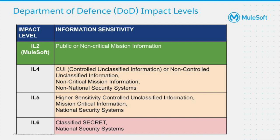DoD impact levels are a combination of the sensitivity of the information to be stored and/or processed in the cloud and the potential impact of an event that results in a loss of confidentiality, integrity or availability of that information. Impact Level 2 or IL2 accommodates DoD information that has been approved for public release or is non-critical mission information. Impact Level 4 or IL4 accommodates DoD's controlled or non-controlled unclassified information, non-critical mission information, and non-national security systems information. Impact Level 5 or IL5 accommodates DoD's higher sensitivity controlled unclassified information, mission critical information, and national security systems information. Impact Level 6 or IL6 accommodates classified information.